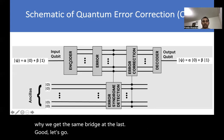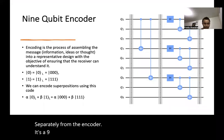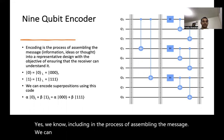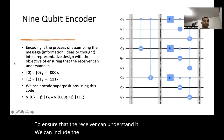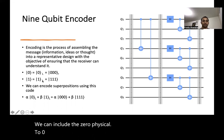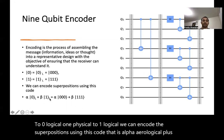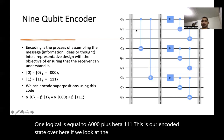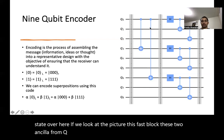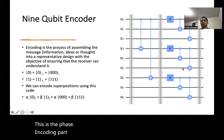Let's look separately at the nine-qubit encoder circuit. Encoding is the process of assembling information into a representative design so the receiver can understand it. We encode |0⟩ physical to |0⟩ logical and |1⟩ physical to |1⟩ logical. A superposition state encodes as α|000⟩ + β|111⟩. In the circuit, the first block from q0 to q3 and q0 to q6 handles phase encoding, and the second block handles bit encoding.